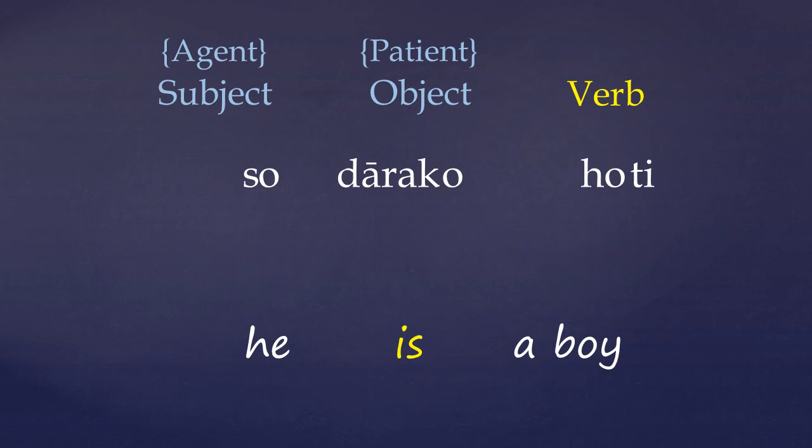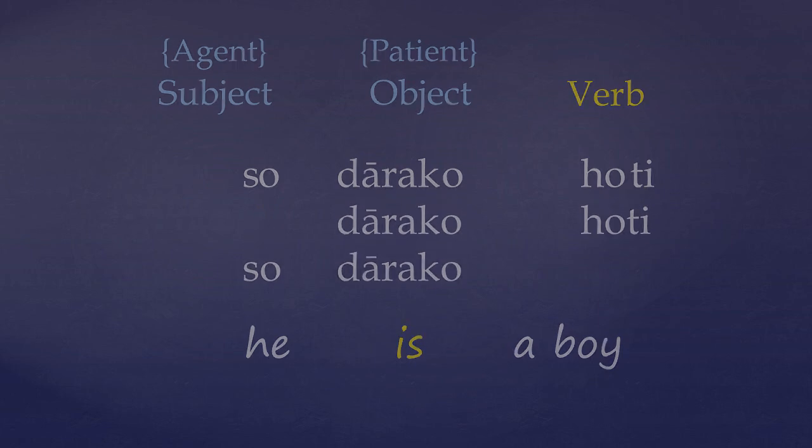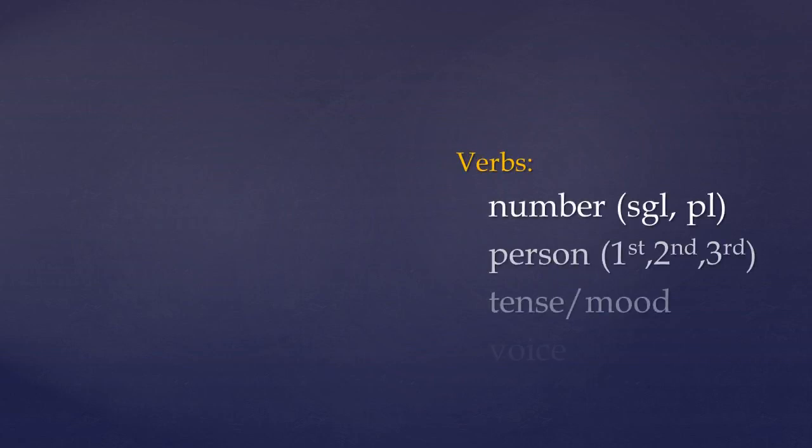And this leads to some intriguing situations, when we consider copulas or linking verbs. For instance, so dārako hoti, he is a boy, can equally be expressed without the subject pronoun, as we've just seen. And if you remember from nominal clauses last week, it's also valid to drop the linking verb itself, and leave that as being implied. So all these three sentences actually mean the same thing. Okay, so we've looked now at how verbs in the present indicative are formed from stems, and marked for person and number by inflectional affixes.